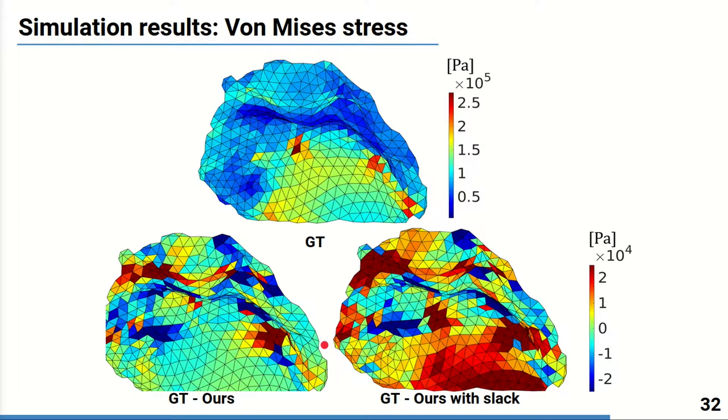The stress distributions obtained for the three cases were analyzed and the results are quite similar to those found in the literature and are in similar ranges of values. Maximum values are between 0.35 and 1 MPa. Lower stress values are observed for the chordae configuration with slack while the chordae obtained with our method spread the stress similarly to those segmented manually.